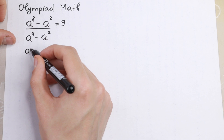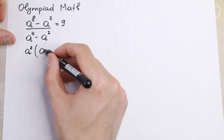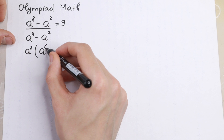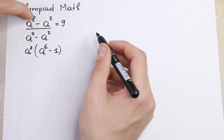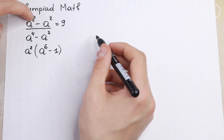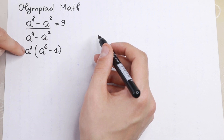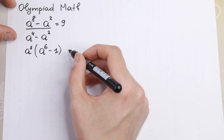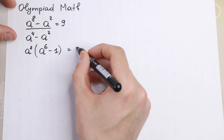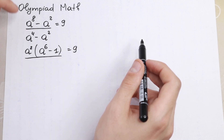We factor out a squared from the numerator, and in parentheses we will have only a to the sixth power minus one. So we bring two powers out of the parentheses, leaving a²(a⁶ - 1), equal to nine of course. And the same in our denominator.